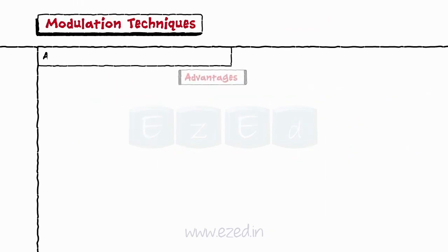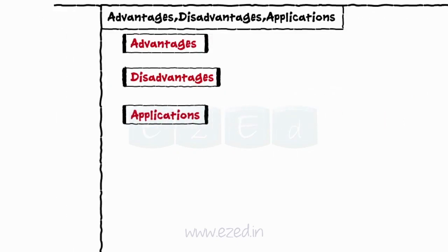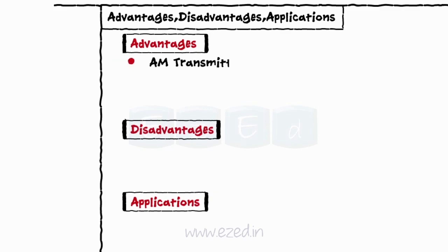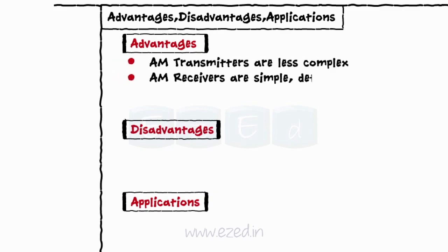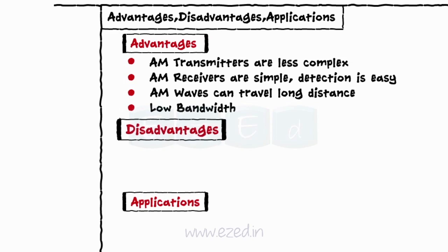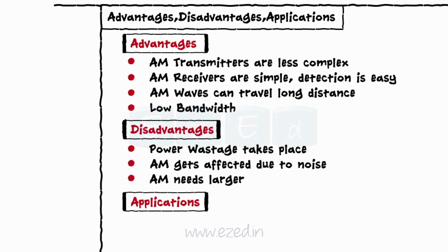Now let's see the advantages and disadvantages of amplitude modulation. Advantages: AM transmitters are less complex, AM receivers are simple, detection is easy, AM waves can travel long distances, and AM has low bandwidth. Disadvantages: power wastage takes place, AM is affected by noise, and AM needs larger bandwidth.